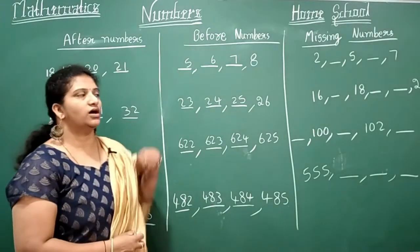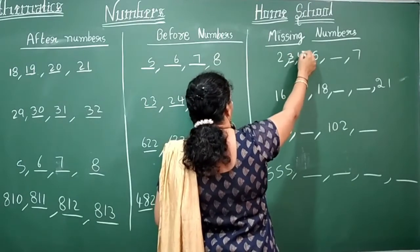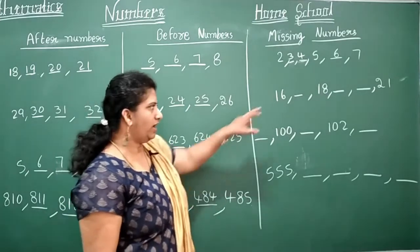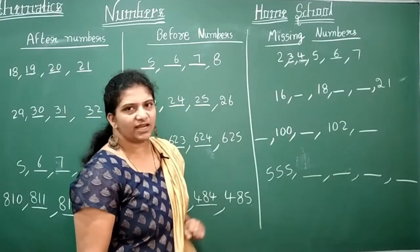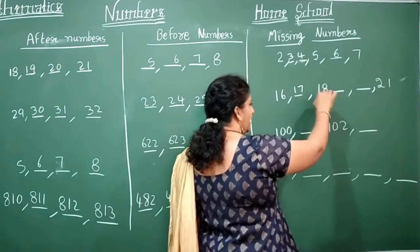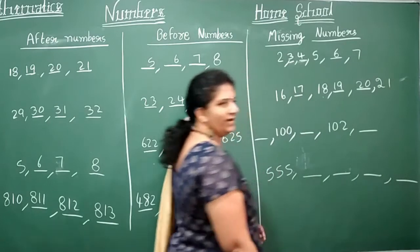Next comes to the missing numbers. 2, 3, 4, 5, 6, 7. So here after 16, what do you get? 17, 18 already there. Next number: 19, 20, 21.